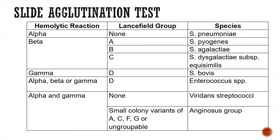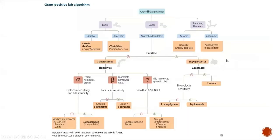You can also perform slide agglutination tests, which is how Lancefield grouping is done. Lancefield Group A is Strep pyogenes, Group B is Strep agalactiae, and under Group D you have Strep bovis, Enterococcus, and others.